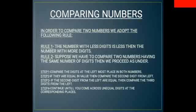Rule 1: The number with less digits is less than the number with more digits. If we have taken a four digit number and a three digit number, the number which has four digits will be greater than compared to the number which has three digits.